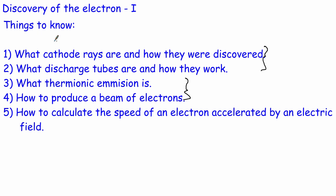So going back to what you need to know: you must be able to describe how a discharge tube works in terms of ionising atoms and free electrons; describe how thermionic emission is produced and what happens to the electrons to accelerate them so you get a beam; and calculate how fast they're going using the equation we've just seen. That's the very first video looking at the discovery of the electron. In the next video, we'll look at how they examined the properties of electrons and worked out the specific charge of an electron. Thank you very much for watching, and I'll see you again soon.